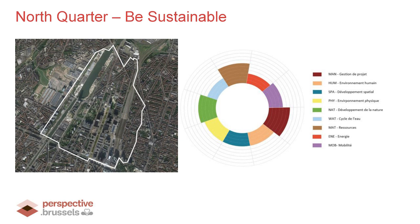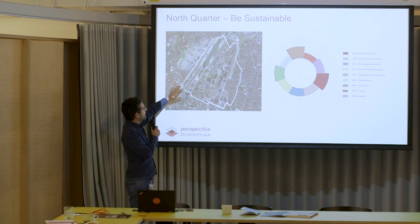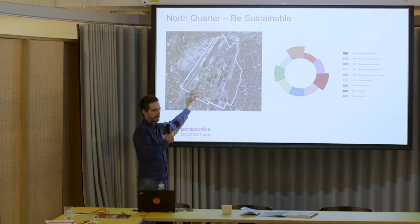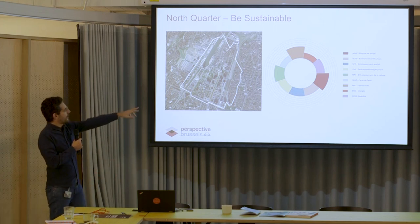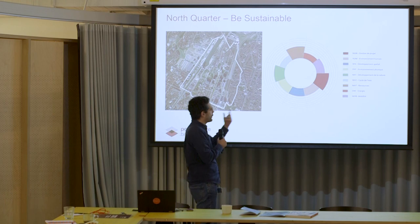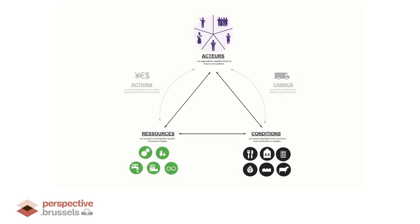The North Quarter is a very monofunctional neighborhood with lots of office space, featuring a train station and canal. It's at a strategic point with harbor amenities and lots of potential because the neighborhood is clearly going to change. The BE Sustainable tool produces a diagram graphically depicting stakes — the importance of different themes for the definition of the program — giving a first aerial view. The goal is to identify what resources exist, under what conditions, with which actors, and which actions can be developed.